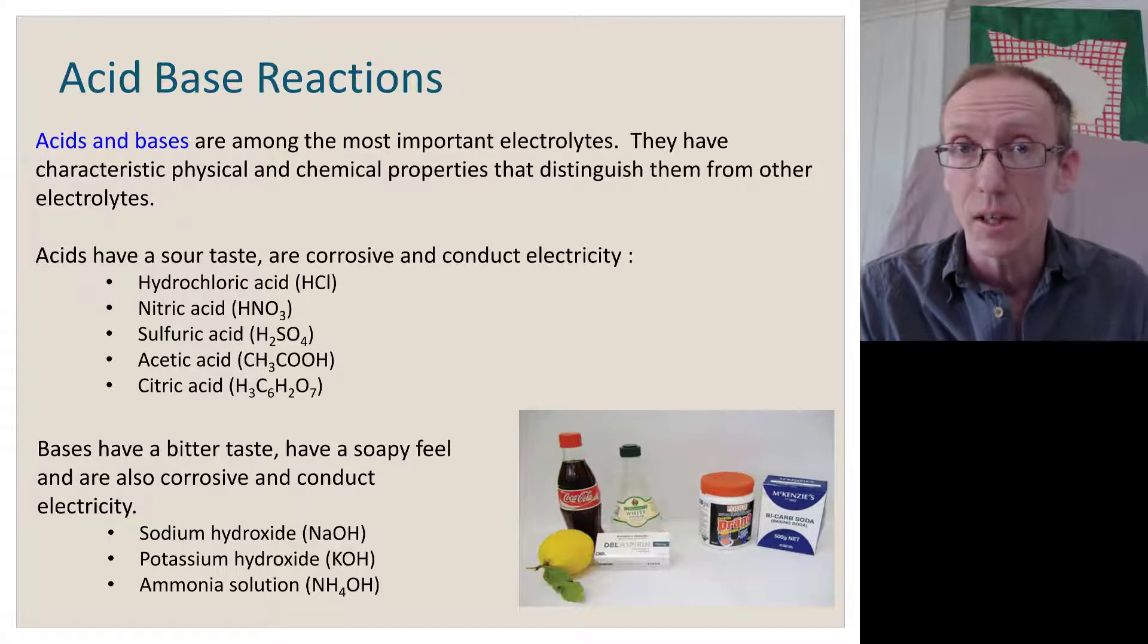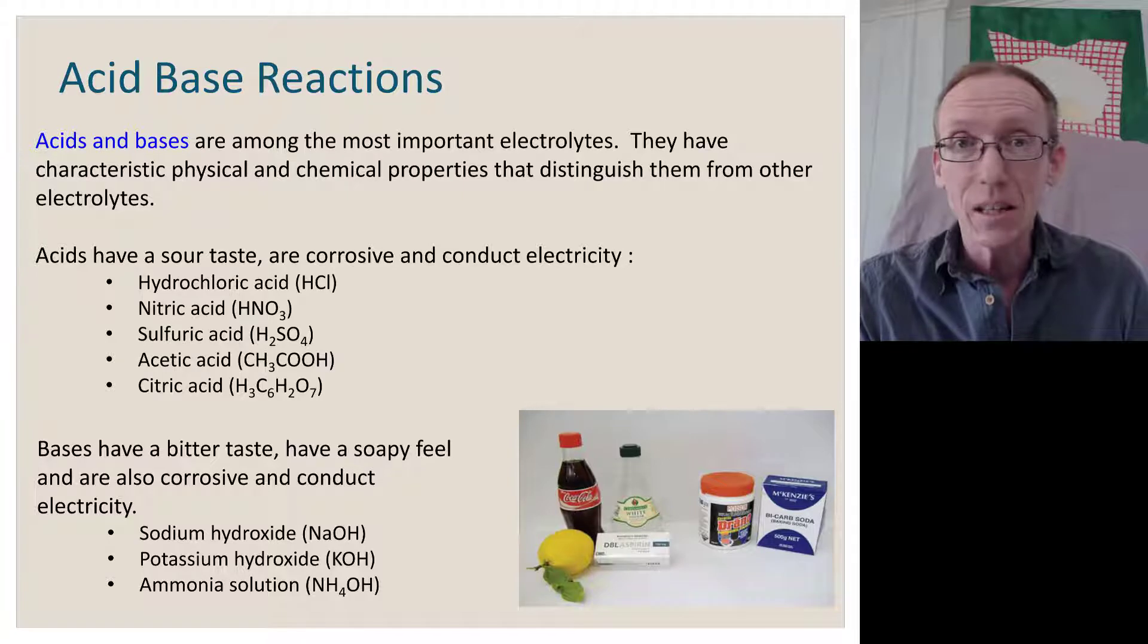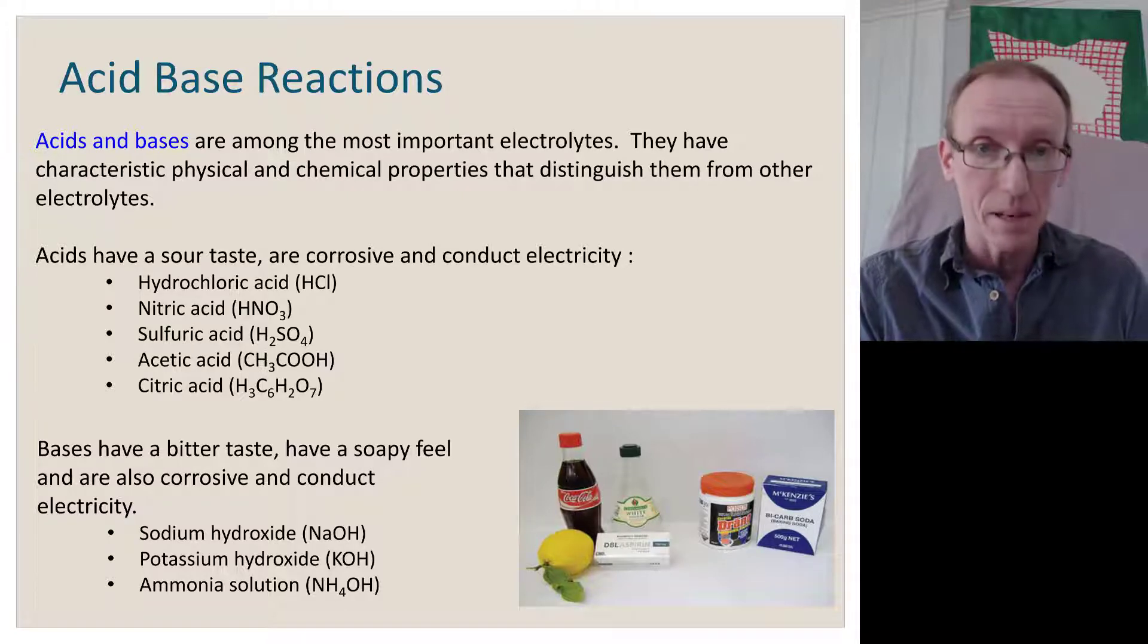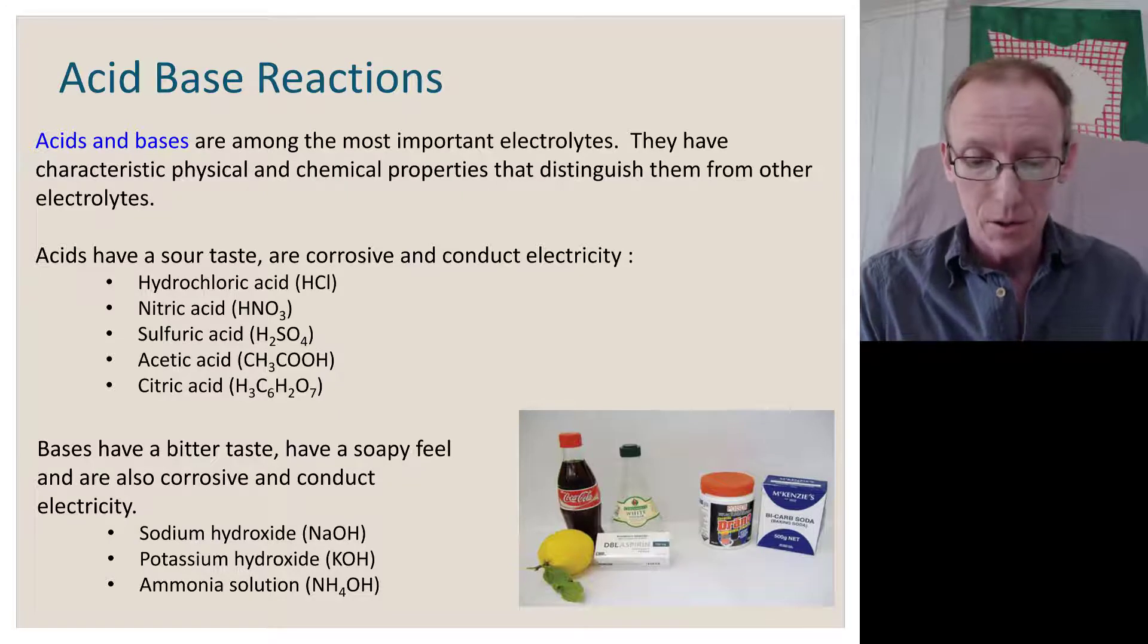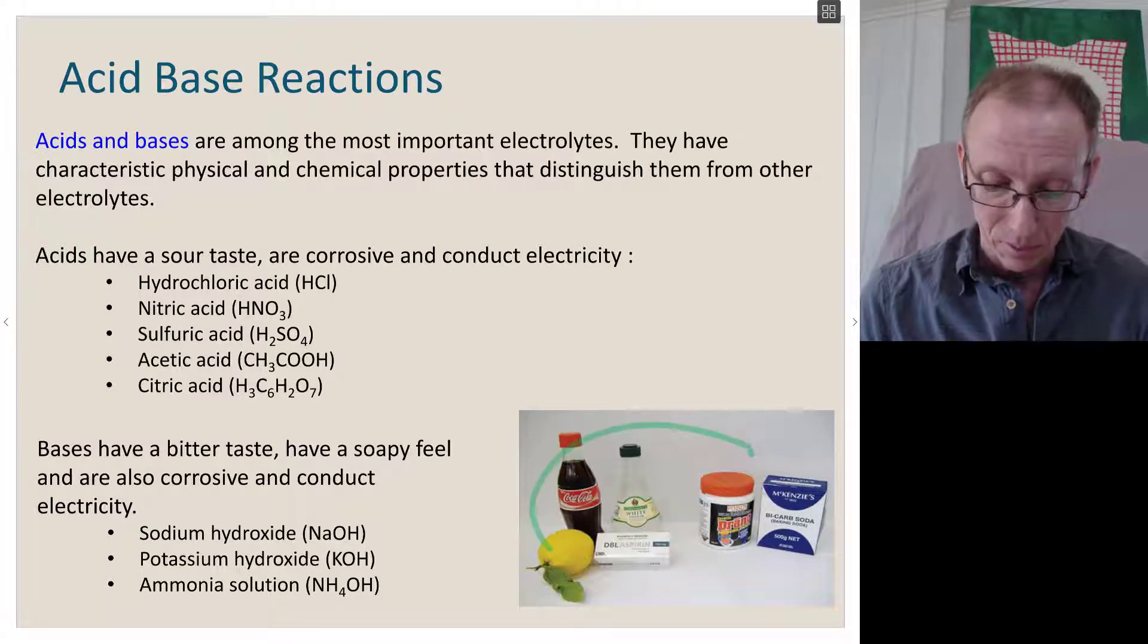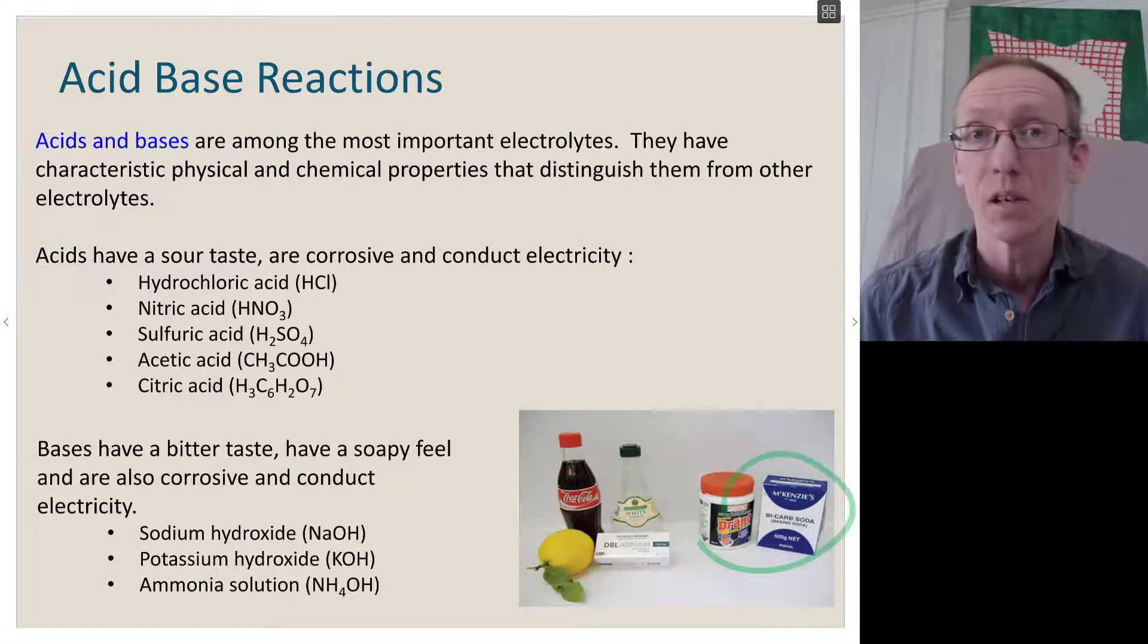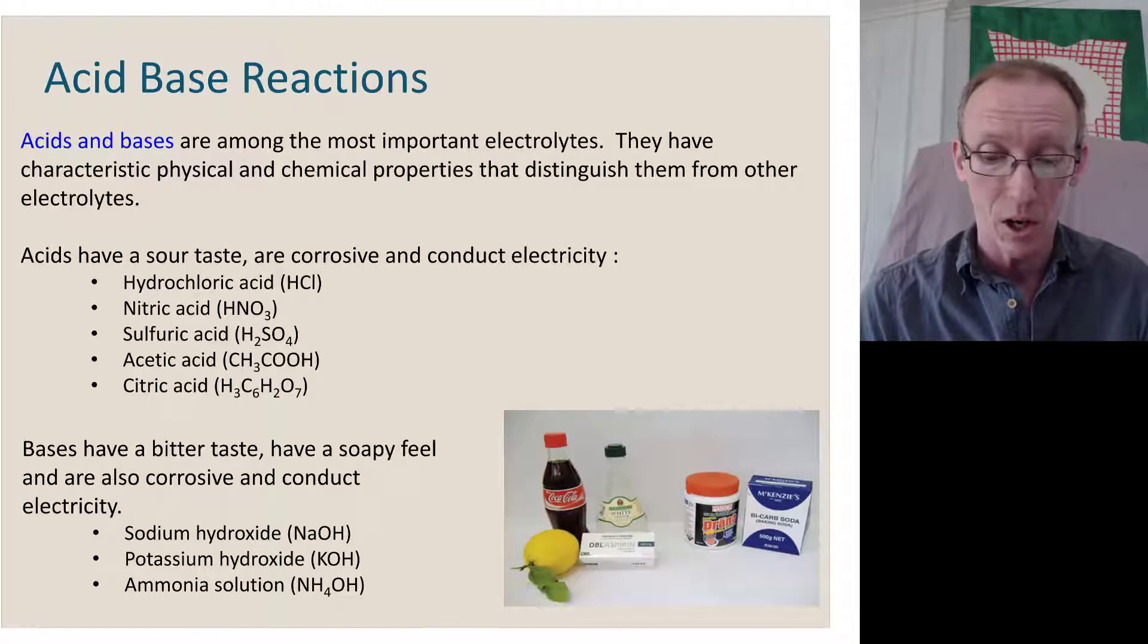Common bases are things like sodium hydroxide, which is the principal component of Drano that you put down your sink if it gets blocked. Potassium hydroxide, a very similar chemical, and ammonia, which in aqueous solution is ammonium hydroxide. So we've got some acids over here and some bases over here. Sodium bicarb is something you might have played around with before, mixing with vinegar to give off CO2.